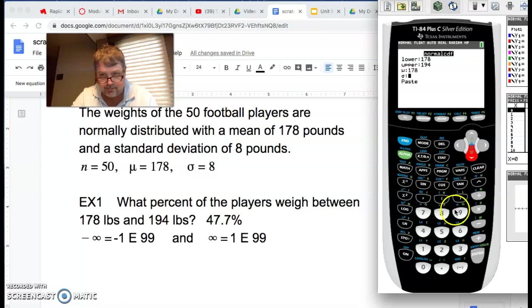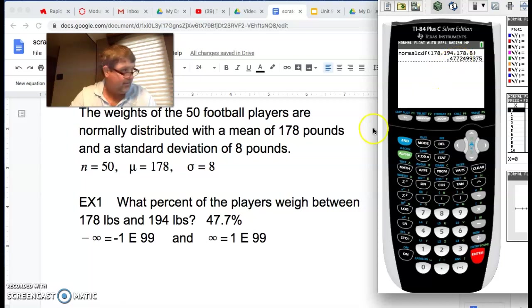Mu is 178, and sigma is 8, and we're going to paste it, and hit enter, and there's that 47.7% right there, so this gives you areas under the curve.